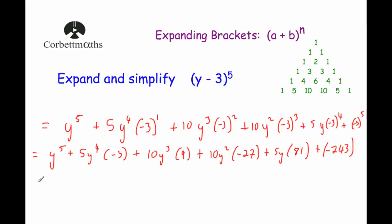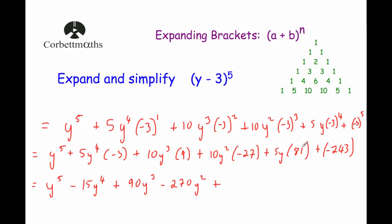Now we simplify, being careful with signs. y to the power of 5; then 5 times −3 is −15, so minus 15y to the power of 4; then 10 times 9 is 90, so plus 90y cubed; then 10 times −27 is −270, so minus 270y squared; then 5 times 81 is 405, so plus 405y; and finally −243, so minus 243. The final answer is y⁵ − 15y⁴ + 90y³ − 270y² + 405y − 243.